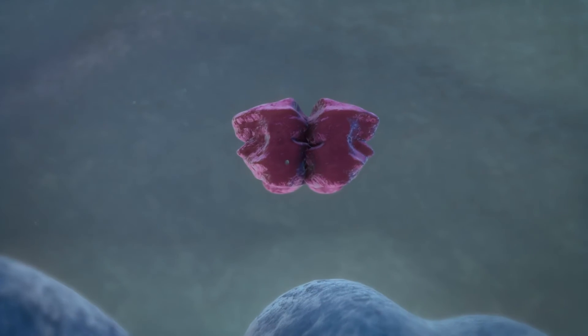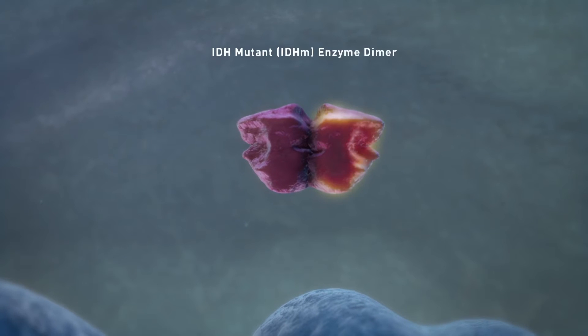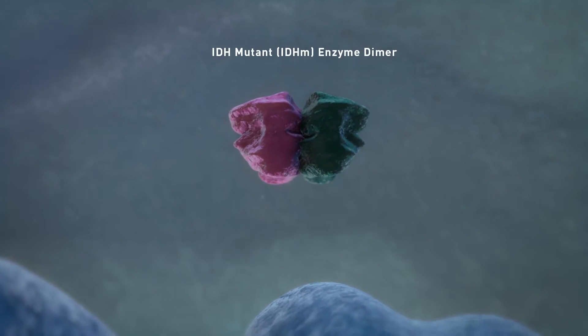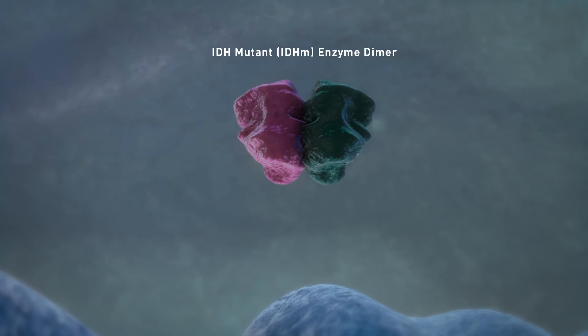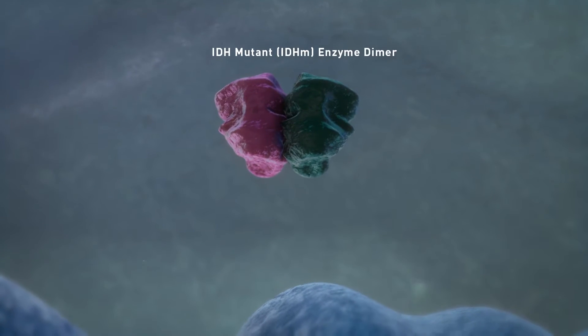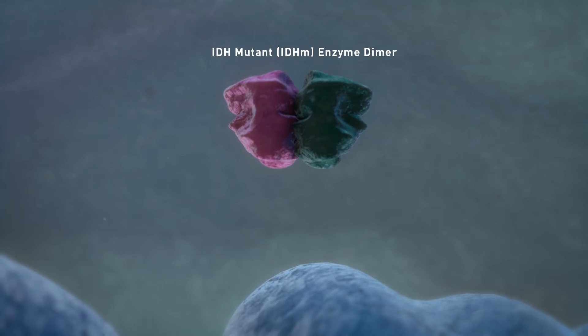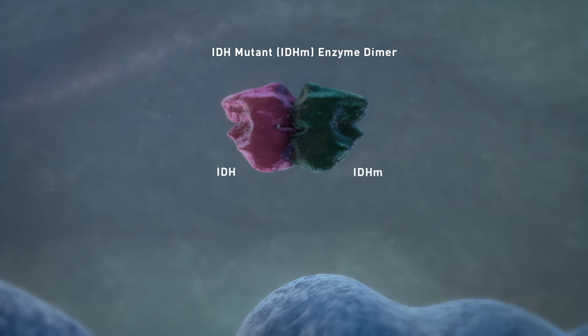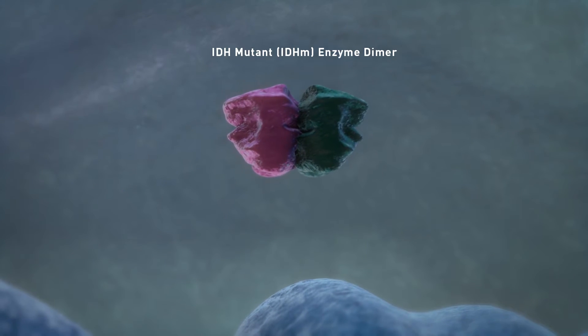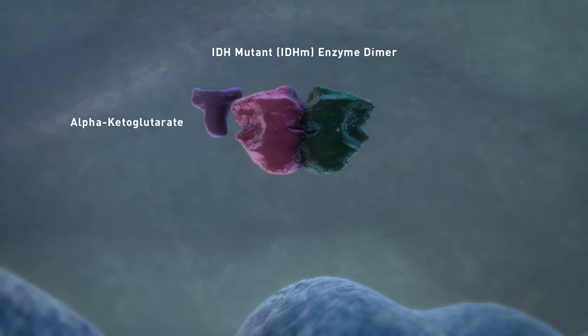In IDH mutant-positive cancers, IDH mutant enzymes acquire a new or neoenzymatic gain-of-function activity that may disrupt normal cellular metabolism. The IDH mutant enzyme dimer has a normal and a mutated copy. The normal copy generates alpha-ketoglutarate.